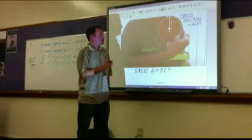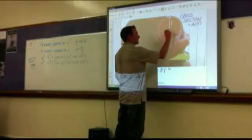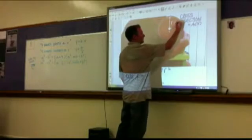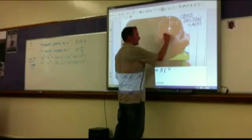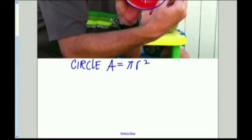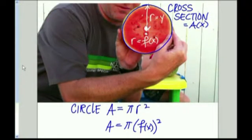And then the idea here is that this distance is r. But because this graph comes from our function f of x, this height is also a y value, right? So we're going to say that r is equal to f of x, which means that our equation down here is going to switch to be that the area is pi times f of x squared.